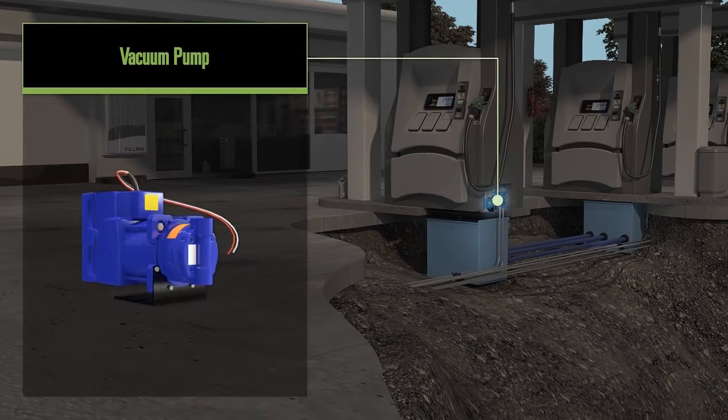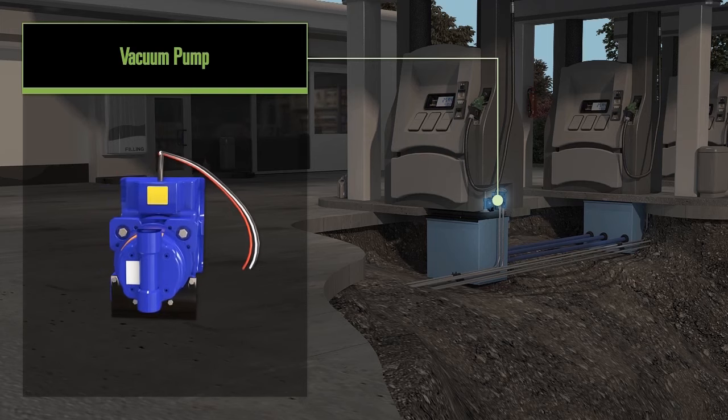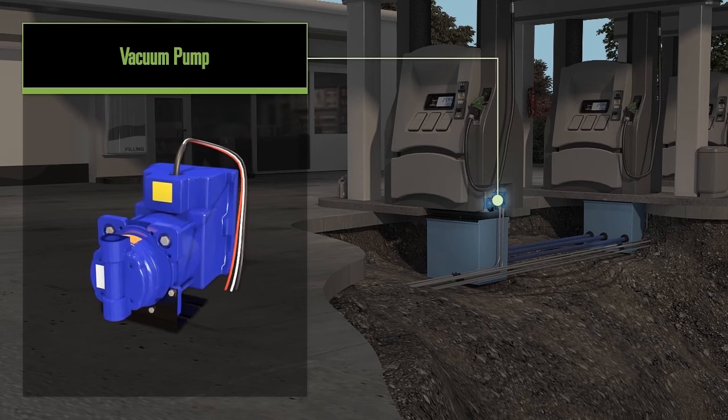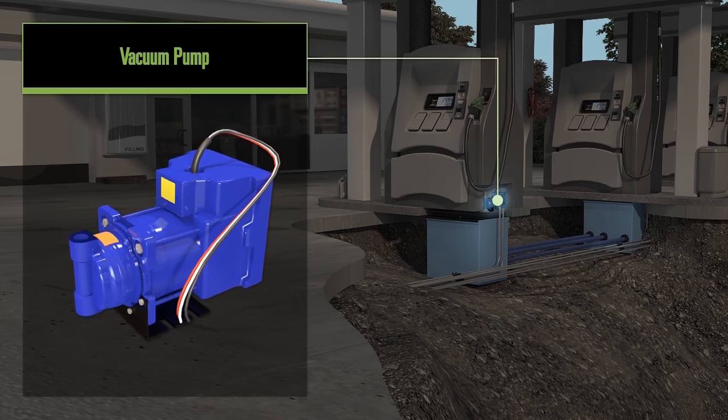In the final stage of fueling, there is another vapor recovery element. Under dispensers, there are vapor recovery pumps meant to pull dangerous vapors out of vehicles' tanks and prevent them from entering the atmosphere.